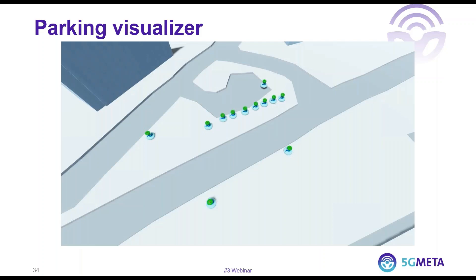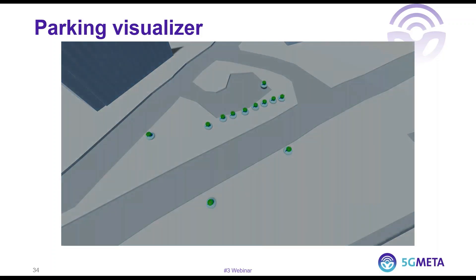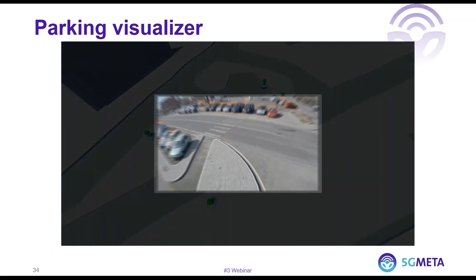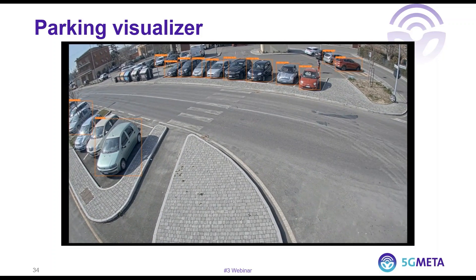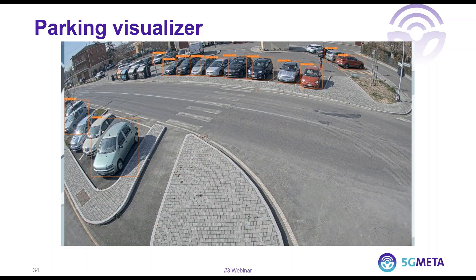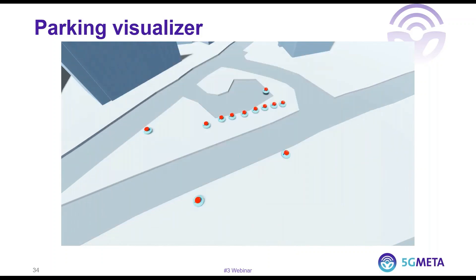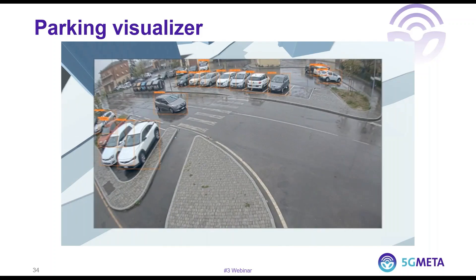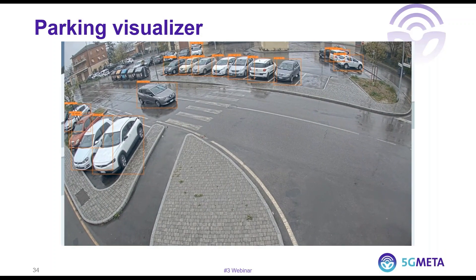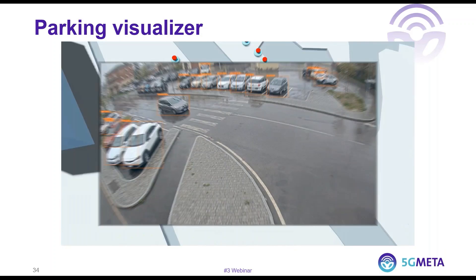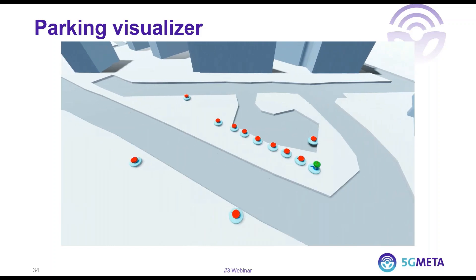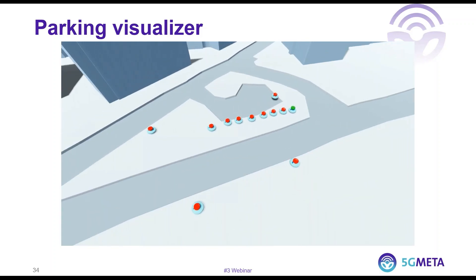For example, if you use the parking position data, you can write a visualizer for the status of parking in the city. As you can see from this demo, all the parking slots are full and therefore in the visualizer all the parking slots are red and occupied. But as soon as one becomes free, then you see that the parking slot becomes green because the detected slot is free as well. Here we also have a 3D visualization of these slots, since the GPS position is also set.